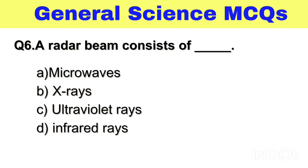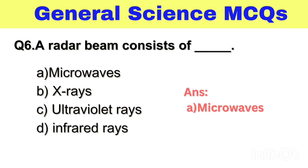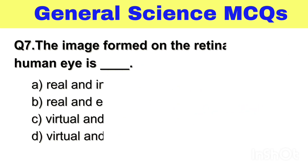Question No. 6. A radar beam consists of — Option A. Microwaves, B. X-rays, C. Ultraviolet rays, D. Infrared rays. The right answer, Option A. Microwaves.